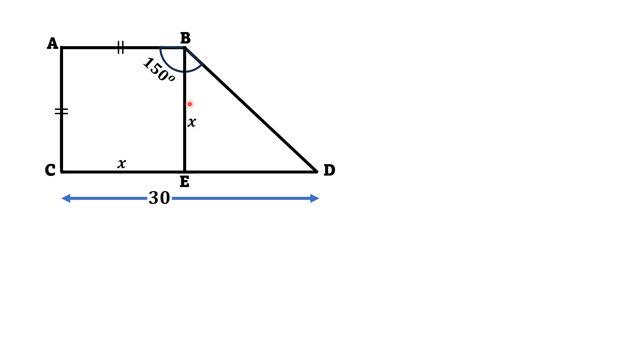Now, if we talk about the angle at point B, then since ABC is a square, this angle must be 90 degrees. So this angle, which is actually angle EBD, is 60 degrees, because this whole angle is 150 degrees and this angle is 90, so this angle must be 60 degrees.